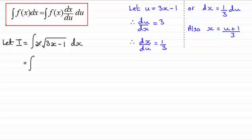So if I put that in place of x, we've got u plus 1, all divided by 3. And then here we've got the root of u, or u to the power half. And then we've got dx by du, which is one third, and then we've got du.